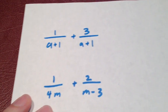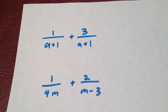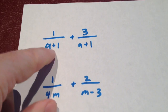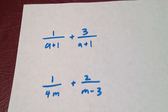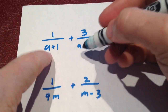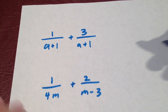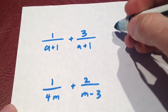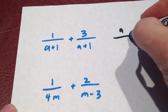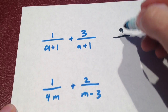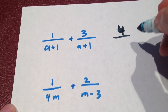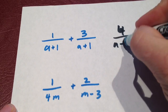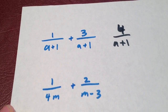Now the algebraic version. I've got one over (a+3) plus one over (a+1) plus three over (a+1). The last two fractions have the same denominator — (a+1) in both cases. Whatever that number a is, adding one to it gives identical denominators. So that already has a common denominator; I just add the numerators to get four over (a+1).